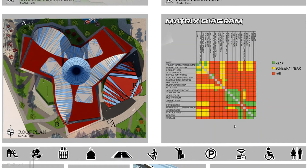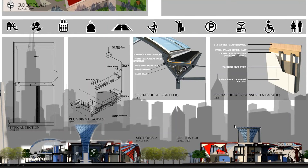There's a roof plan on the left-hand side and I've listed out the metric diagram on the right-hand side. There's also a typical section plumbing diagram, a special detail of the gutter I've used, and I've also used ETFE cushion foam in the entrance of the building in white color. I've also listed the rain screen facade in red and white color on the sides of the buildings, and I've made Section A and B.